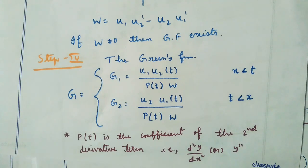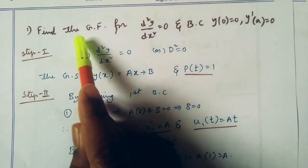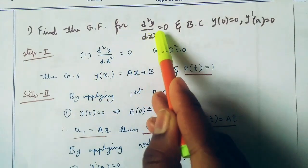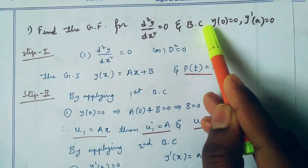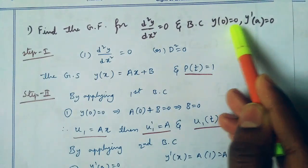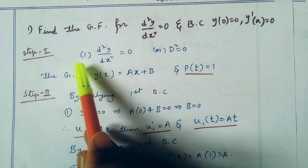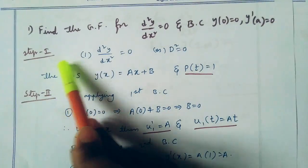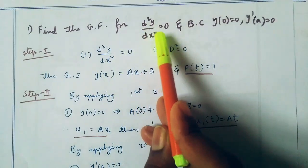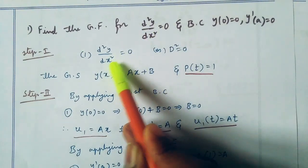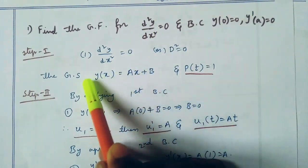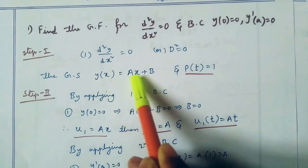By using this method, we can find the Green's function for any boundary value problem very easily, since there is no need to find the constants. The problem: find the Green's function for d²y/dx² equal to 0, with boundary conditions y(0) equal to 0 and y'(a) equal to 0. As usual, the first step: the differential equation is d²y/dx² equal to 0, and the general solution is y(x) equal to ax plus b.